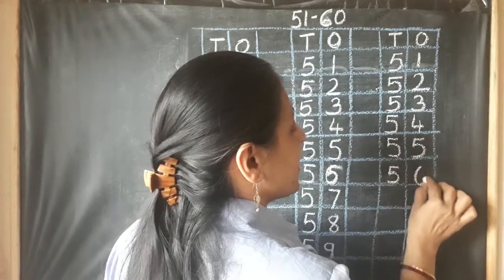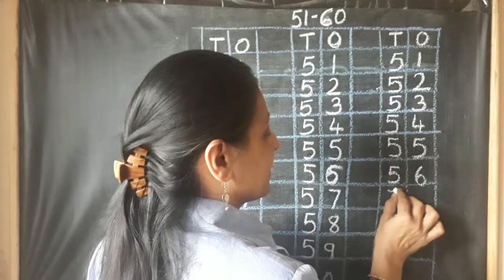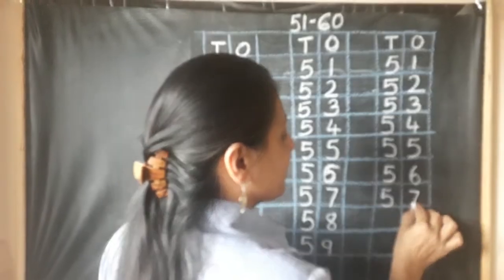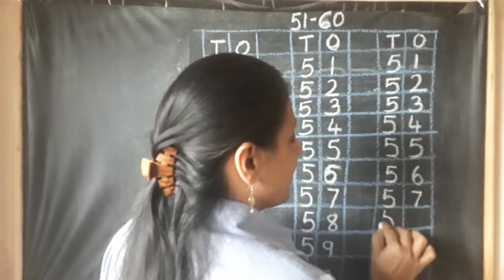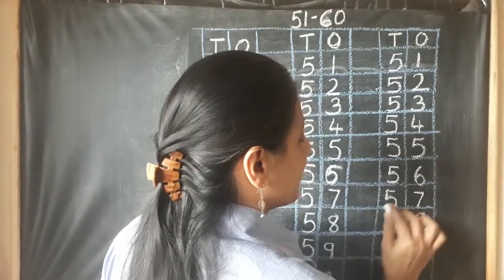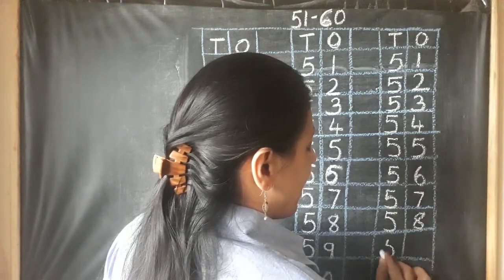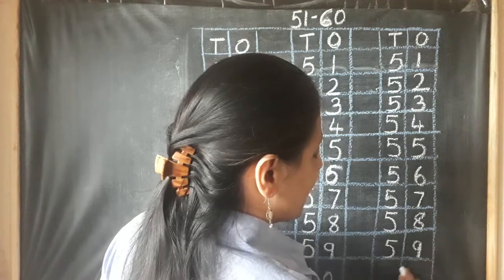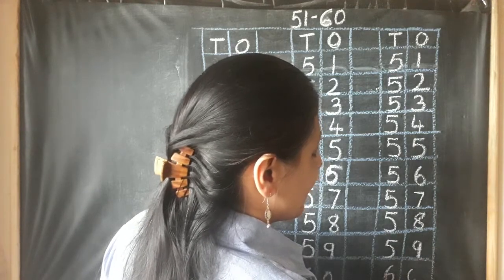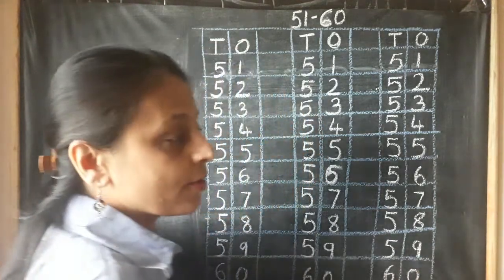5, 6, 56. 5, 7, 57. 5, 8, 58. 5, 9, 59. And 6, 0, 60. 6, 0, 60.